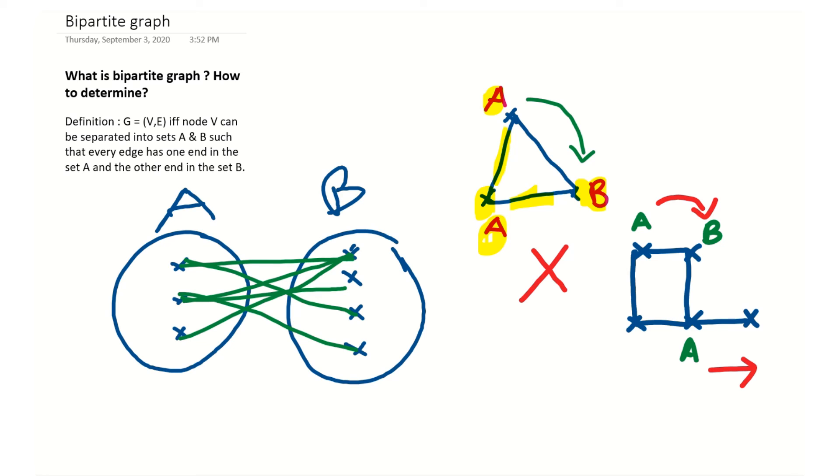any. So if that node is A, this node should be in set B. And the other edge - it is in A, so this should be in B.